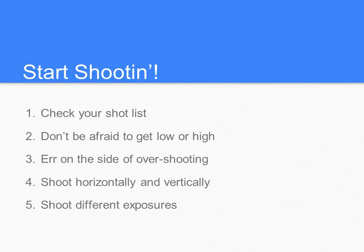Now it is finally time to start shooting. Take a quick look at your shot list and then start snapping away. Don't be afraid to move — get low, get high, get sideways, and don't be afraid to contort yourself into odd angles. Make sure you are wearing comfortable clothes. I always err on the side of overshooting because you want as many options as possible. Sometimes you get really caught up shooting horizontally, so make sure you also rotate your phone and shoot vertically. Feel free to shoot the same scene at different exposures with different focal points — that way if there are harsh shadows, you can blend photos together to create a perfectly lit photo.